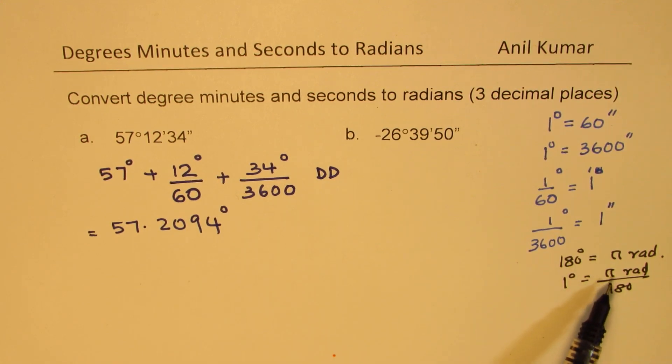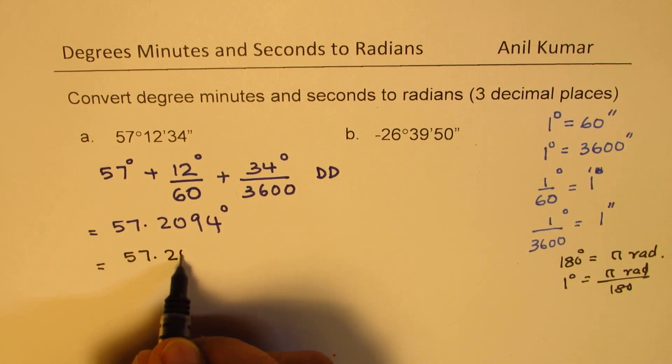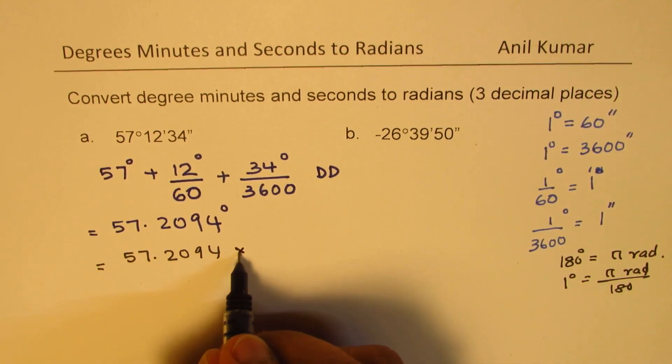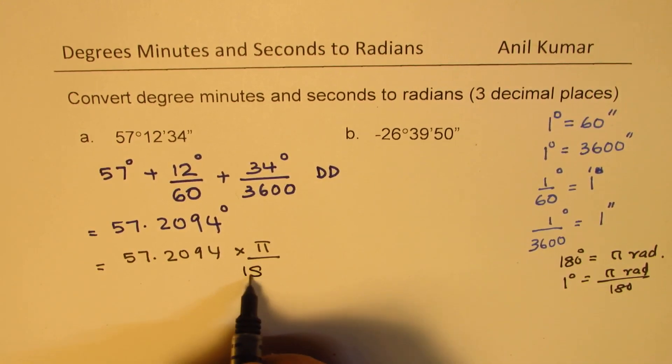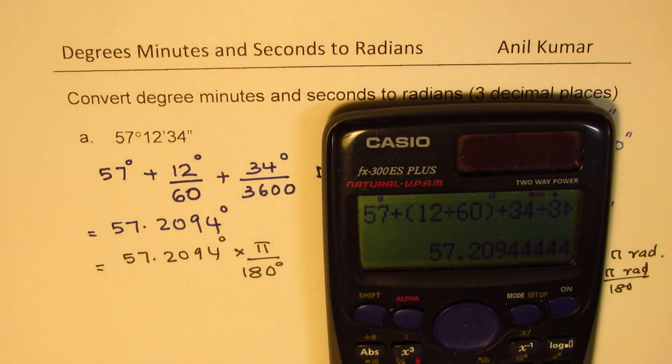So this degree will now be written as pi radian over 180. So we can write this as 57.2094 times pi divided by 180. So this is degrees, that is also degrees, they will cancel away. Or you could treat like this: one degree was pi over 180, then you don't have to write degree here.